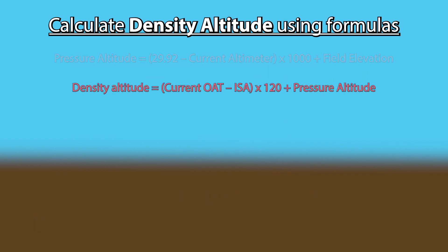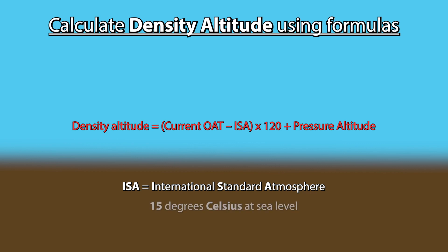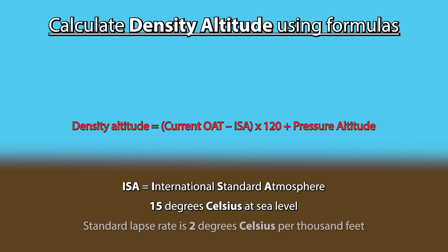Then use the density altitude formula. Take the outside air temperature and subtract the International Standard Atmosphere — that is, what the outside air temperature should be on a standard day. Standard temperature is 15 degrees Celsius at sea level, and the standard lapse rate is 2 degrees Celsius per 1000 feet.